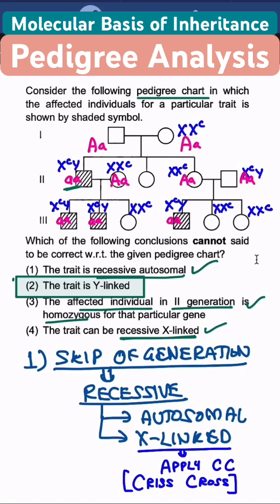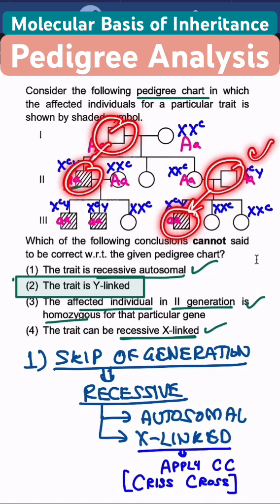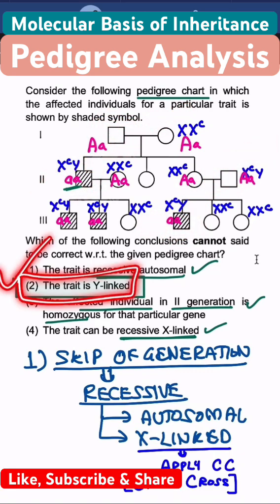This particular trait is not Y-linked because Y-linked traits travel from father to son. Here the father is normal, but the son is affected, and that's why the second option is the best answer.